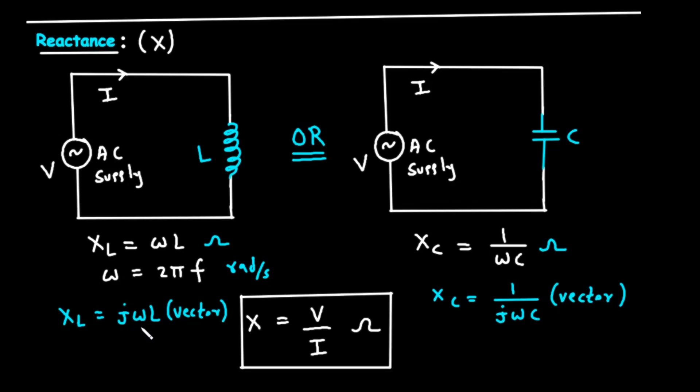in an inductor, the voltage and current are not in sync. The voltage across the inductor leads the current through it by 90 degrees. This is called a phase shift.